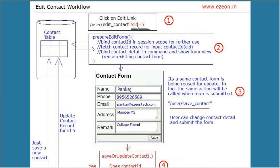When you click on the link, a method will be called in the controller and this method will do multiple steps. The very first step will be that the contact ID will be stored in a session scope for further use, and then it will fetch the complete detail for that contact ID from the database server. When the record is given by the database server, we will bind that complete contact detail in a command so that the command will be accessible from the view.